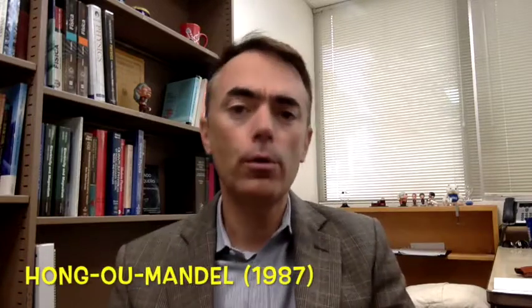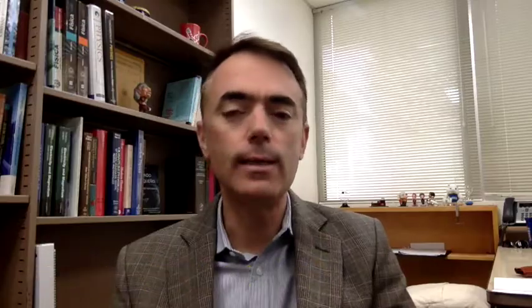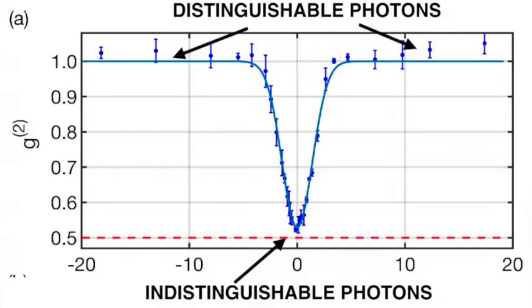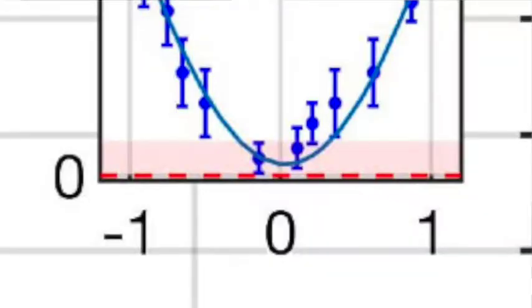Then I changed slightly the time of arrival of one of the pulses with respect to the other. This made them slightly distinguishable, and then I began to detect coincidences, which increased as the difference between the photons increased. This effect is called the Hong-Ou-Mandel effect, in honor of the scientists who studied it for the first time in 1987. And this plot is the Hong-Ou-Mandel dip. From this graph, with our method, we have been able to extract information that comes only from the one-photon interaction.